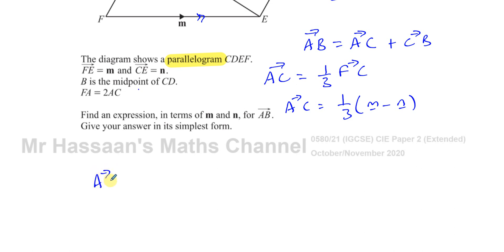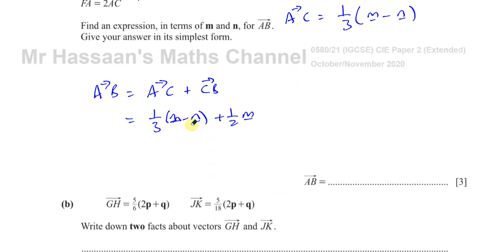Therefore we can say the vector from A to B is equal to the vector from A to C plus the vector from C to B, which we've determined is a third times M minus N plus a half of M. Now we can simplify this as a third times M minus a third times N plus a half times M. I want to add the M terms together so I can say that's two sixths of M plus three sixths of M minus one third of N. That gives me five sixths of M minus one third of N and there's the vector from A to B.